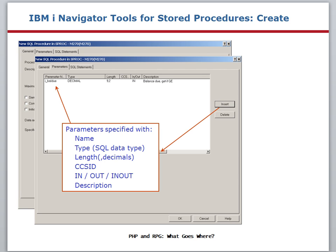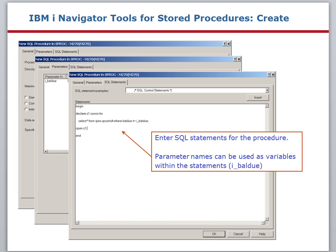Notice that the name given to the parameter is i_baldue, an input parameter of a balance due amount. Finally, click the SQL statements tab and enter the code for the stored procedure. You'll need the BEGIN and END delimiter keywords as shown here. Between those keywords, you can enter as many SQL statements as you need, each statement ending with a semicolon. In this example, a cursor variable named C1 is defined. It is a cursor for the SQL SELECT statement that gets data from the customer credit file. Notice that the WHERE clause selects rows where the balance due is greater than or equal to the i_baldue parameter value. The OPEN C1 statement runs the SELECT statement. After the OPEN, control returns to the caller. In a PHP application, the results are now available as a result set.